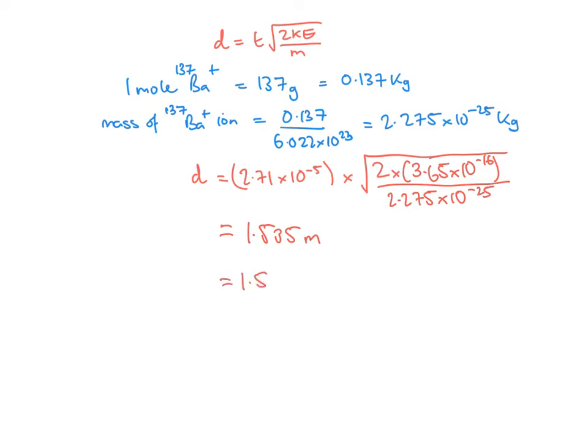So the distance is 1.54 meters. In chemistry exam questions the answers are always genuine — a flight tube of 1.54 meters would fit in a room, albeit the whole instrument might still be large. Getting a very small or very large distance should ring alarm bells, so 1.54 meters feels like a correct answer.